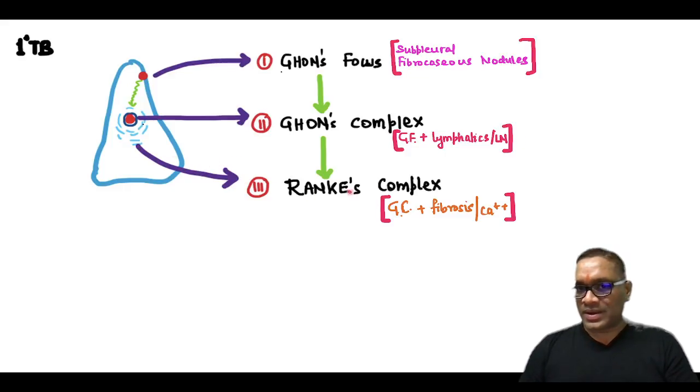Third is the Ranke's complex. So as chronicity will increase, fibrosis and calcification will be happening around this. So Ranke's complex is Ghon's complex plus fibrosis and calcification.